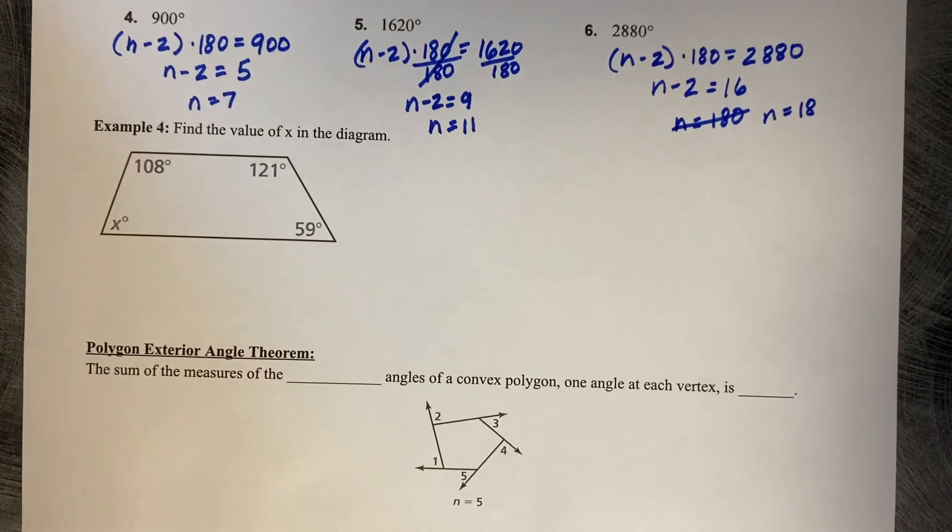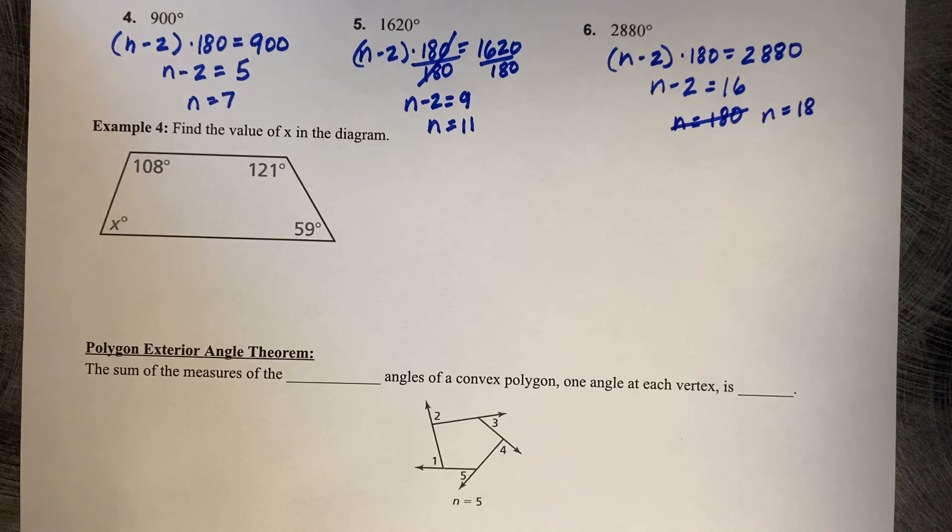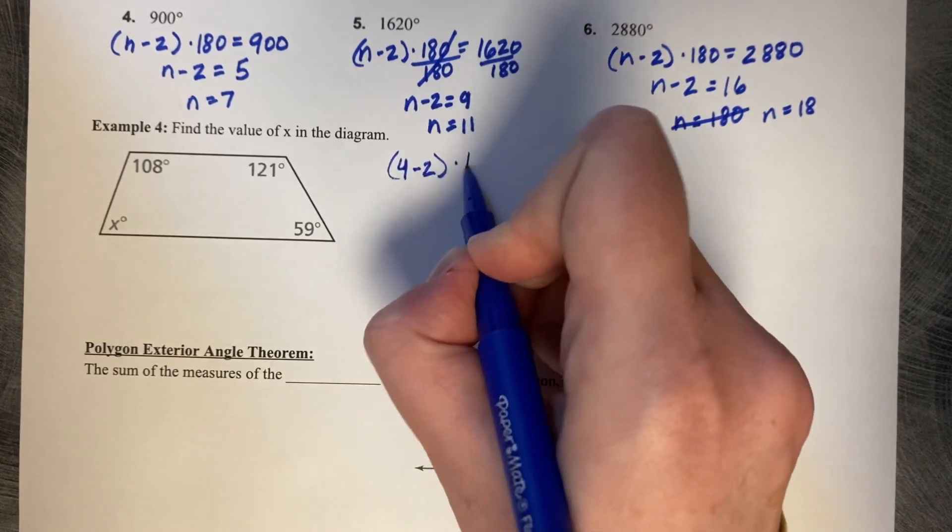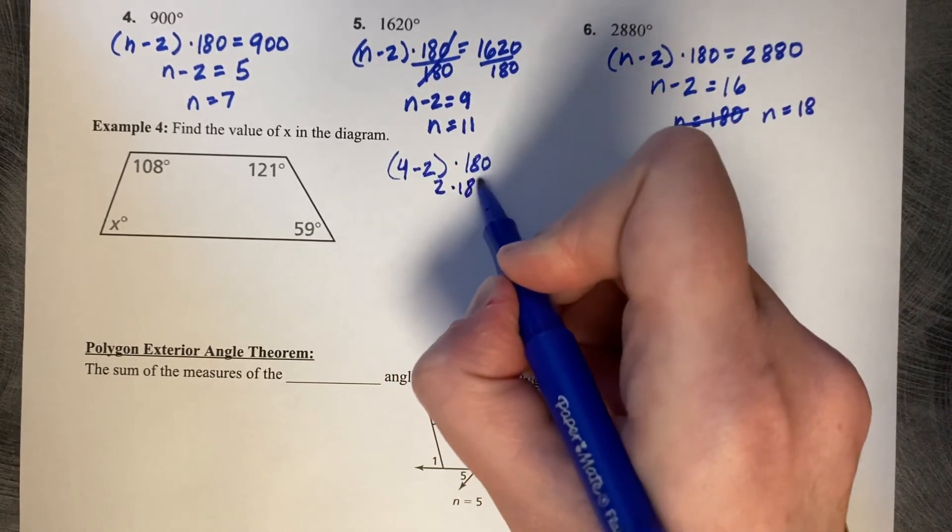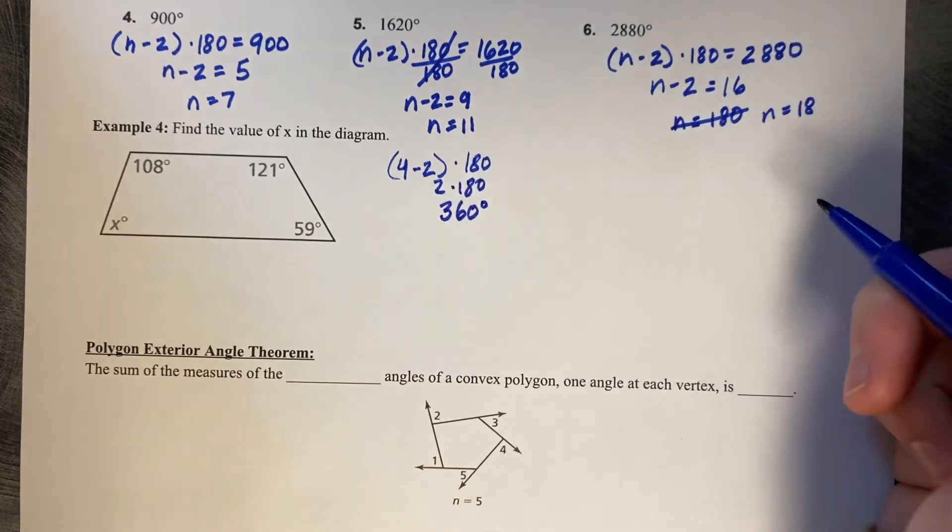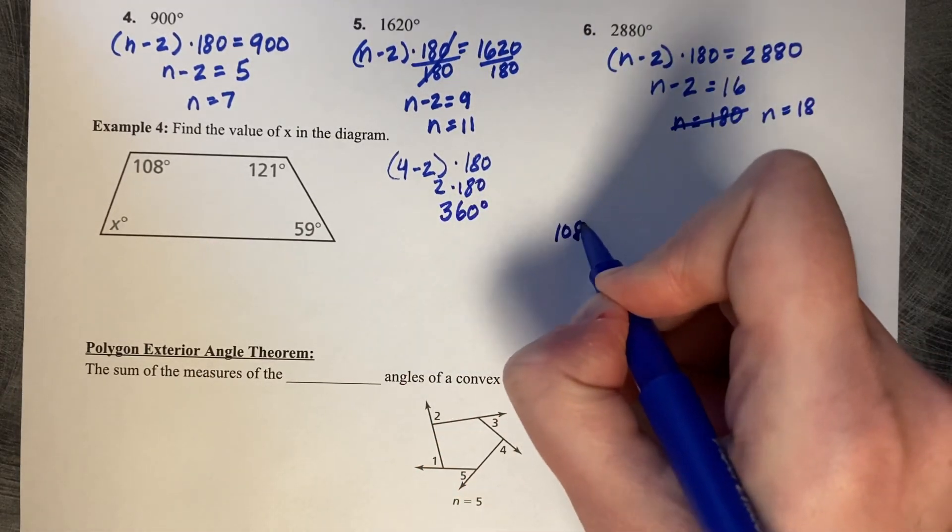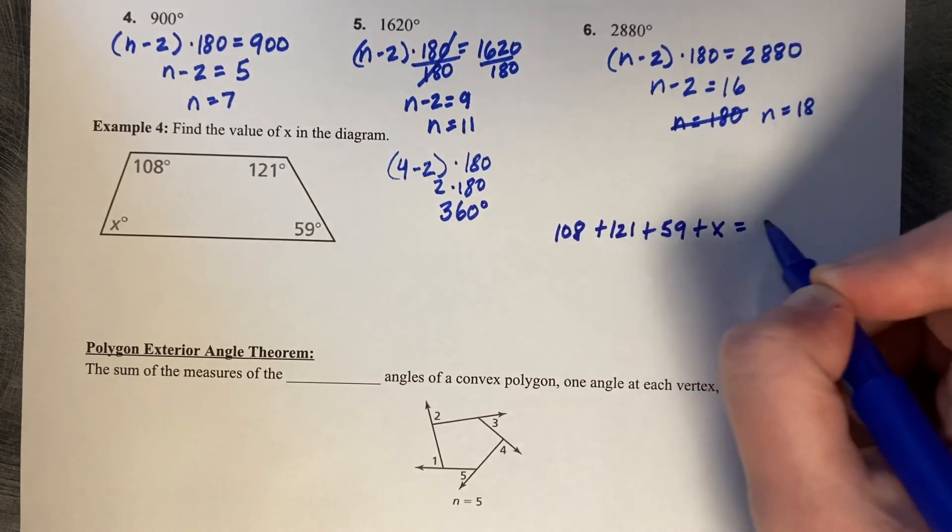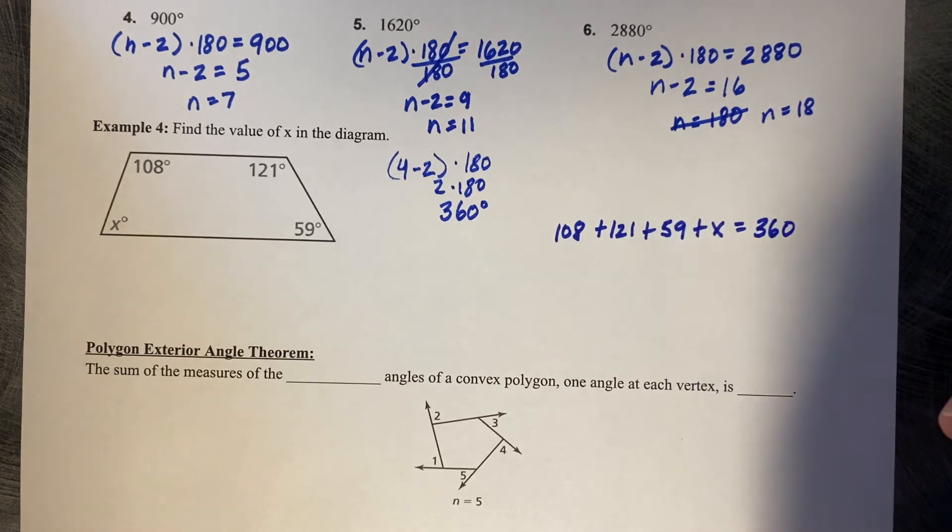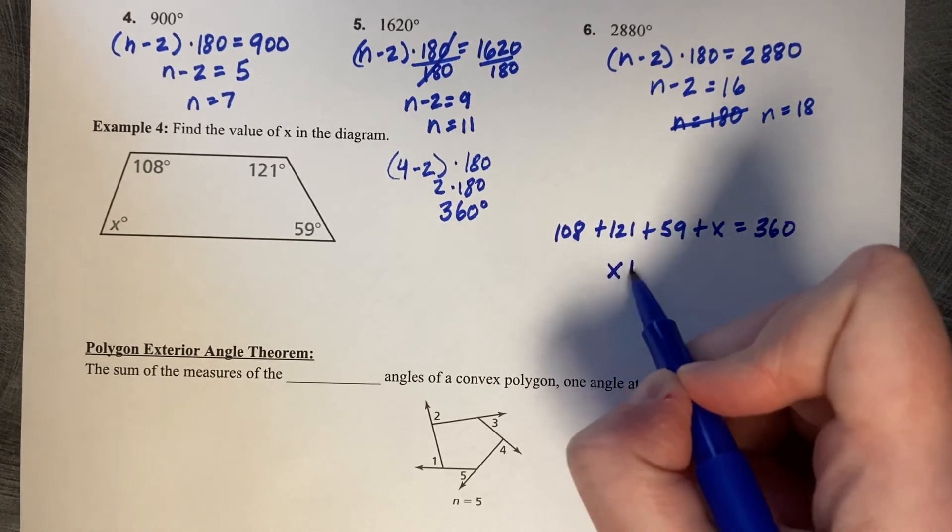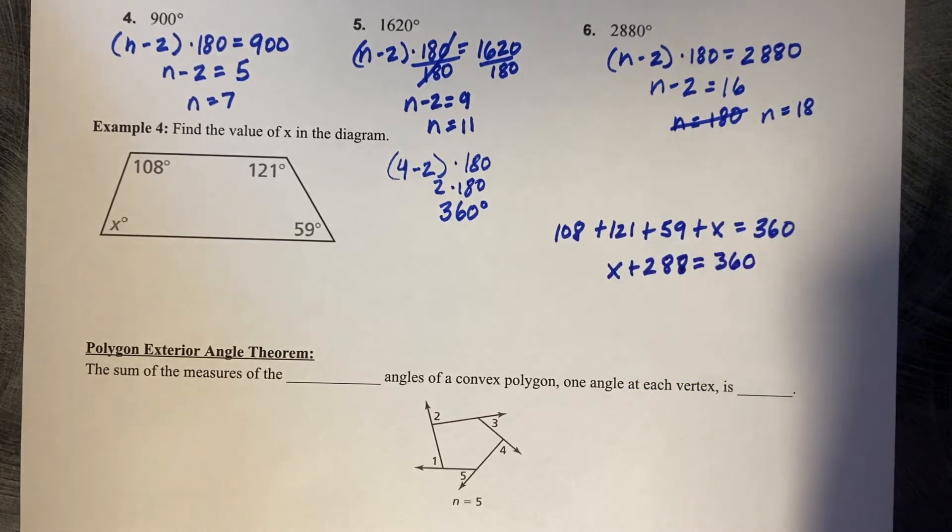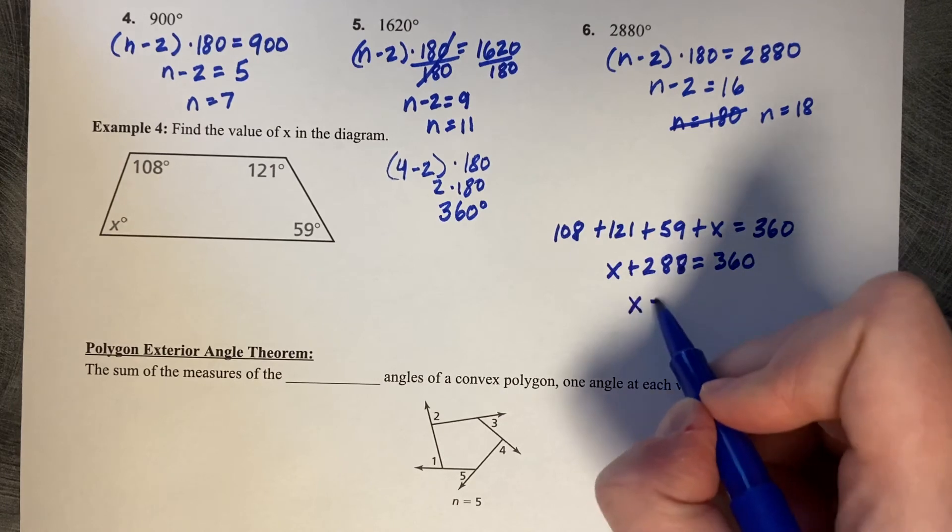Alright, pause this video and try this example on your own. Find the value of x in the diagram. It's a four-sided figure. Four minus two times 180, which I know is two times 180, which is 360 for our total. So then we're going to do 108 plus 121 plus 59 plus x equals 360. x plus 288 equals 360. Minus 288, x equals 72.